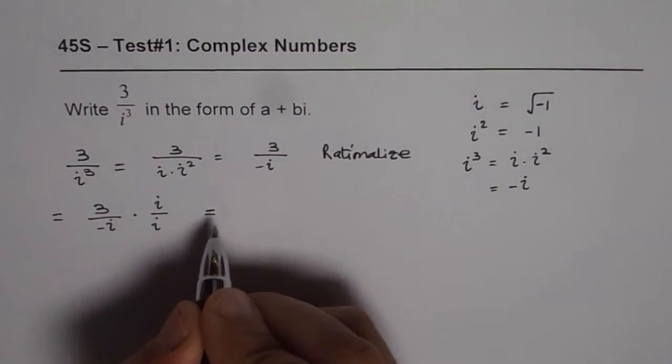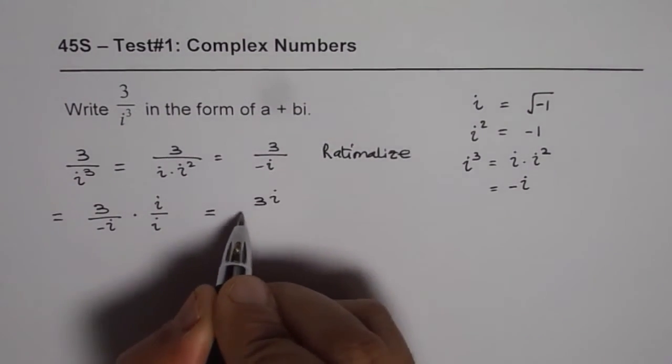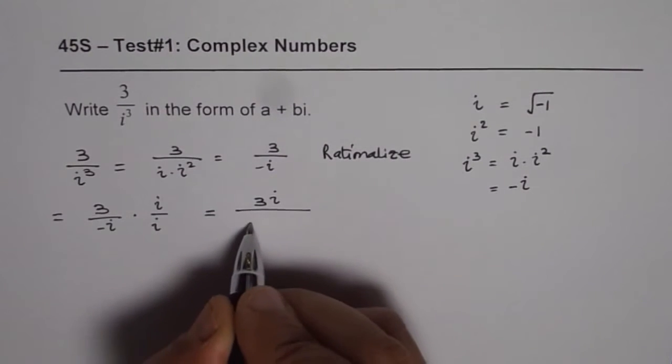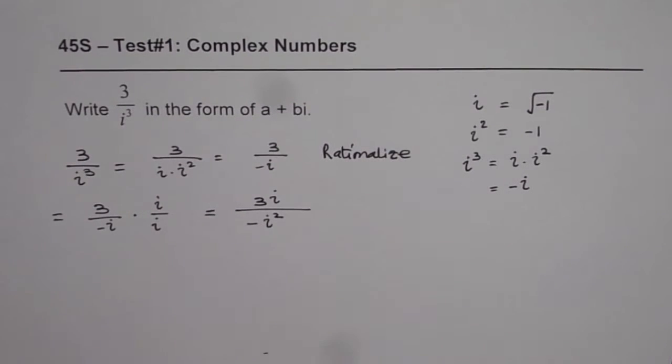So when you do that, what do you get? You get 3i in the numerator and denominator is minus i square.